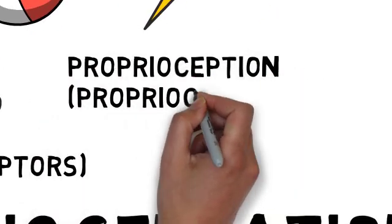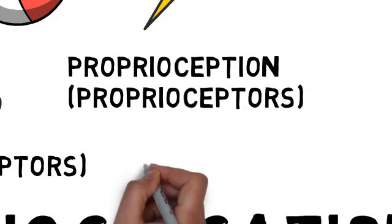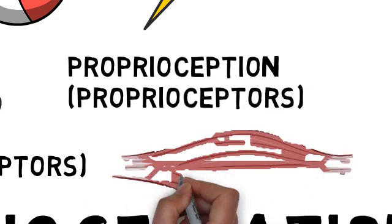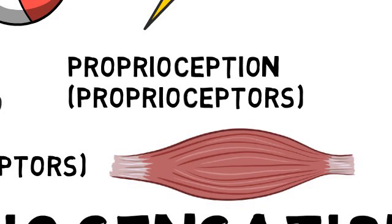Proprioceptors in our muscles and joints send information about body position and movement to the brain, helping us maintain balance and coordination.